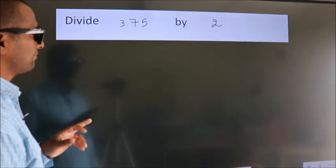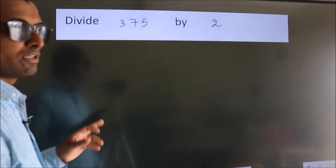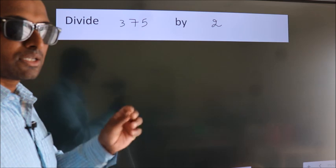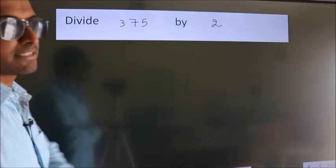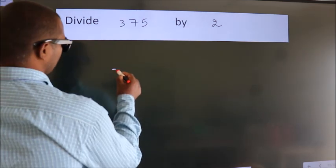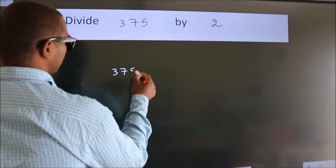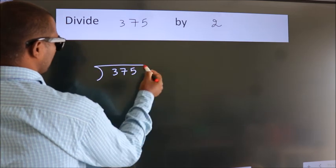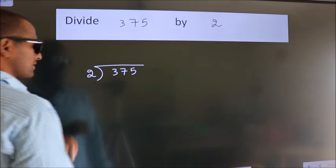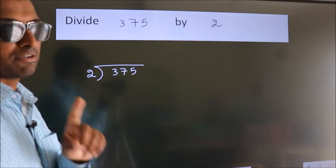Divide 375 by 2. To do this division, we should frame it in this way. 375 here, 2 here. This is your step 1.